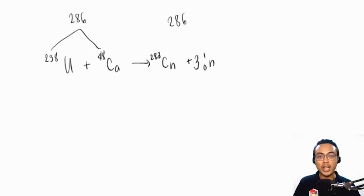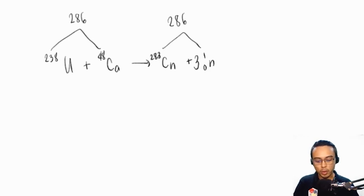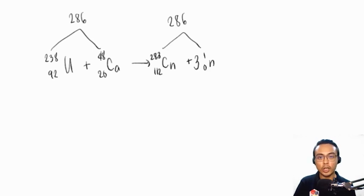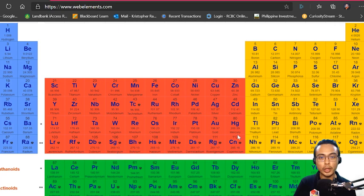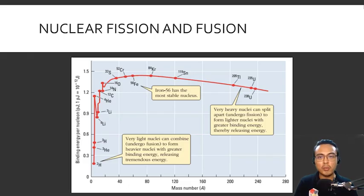Multiplying the neutron coefficient by 3: 283 plus 3 equals 286, which is now balanced. Checking atomic numbers: uranium (92) plus calcium (20) equals 112, which matches copernicium's atomic number on the periodic table. Therefore, the balanced transmutation equation is: uranium-238 plus calcium-48 yields copernicium-283 plus 3 neutrons. That is how worded problems are converted into nuclear equations.